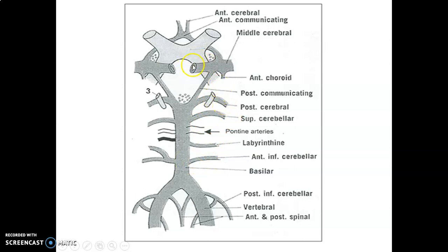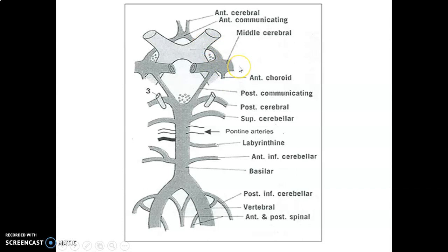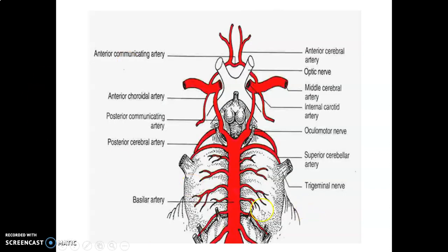When you come to the internal carotid system, it gives posterior communicating, anterior choroidal, and terminates by dividing into anterior cerebral and continues as middle cerebral arteries. The branches of internal carotid include posterior communicating artery, anterior choroidal, anterior cerebral, middle cerebral. It also gives ophthalmic artery that enters the orbit through the optic canal, and also gives hypophysial artery that supplies the pituitary gland.